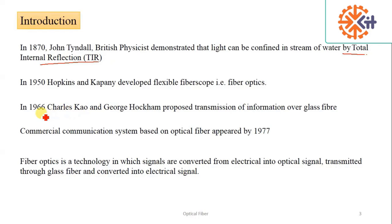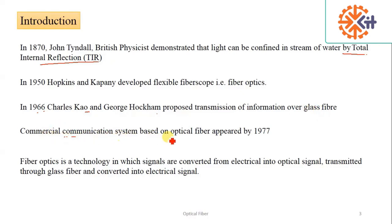In 1966, Charles Kao and George Hockham proposed the transmission of information over glass fiber. But during those times, the glass material used in making optical fiber had a lot of attenuation problems. In 1970, Corning Glass Works produced low-loss glass fibers, and after that commercial communication systems based on optical fiber appeared.